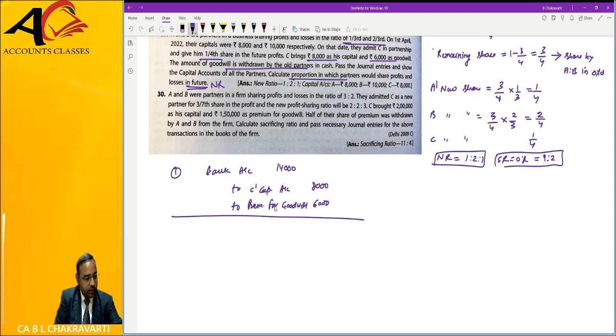With this 14000, the premium for goodwill is to be transferred to A and B in the sacrifice ratio. That is 2000 and 4000.